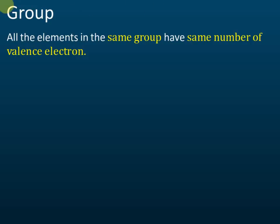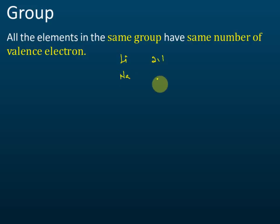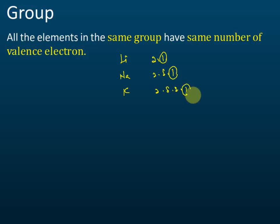For example, in Group 1, the first element is lithium with electron arrangement 2,1; sodium is 2,8,1; and potassium is 2,8,8,1. All of them have one valence electron.